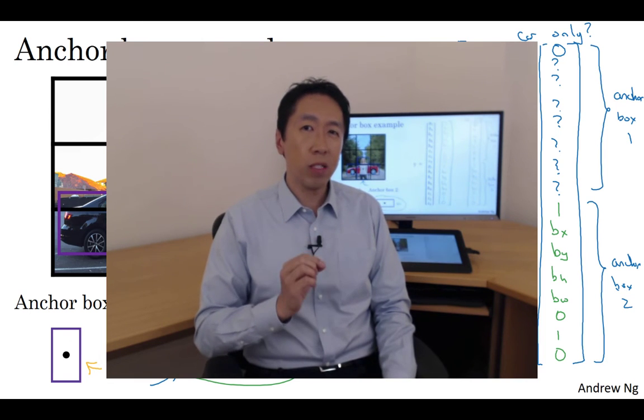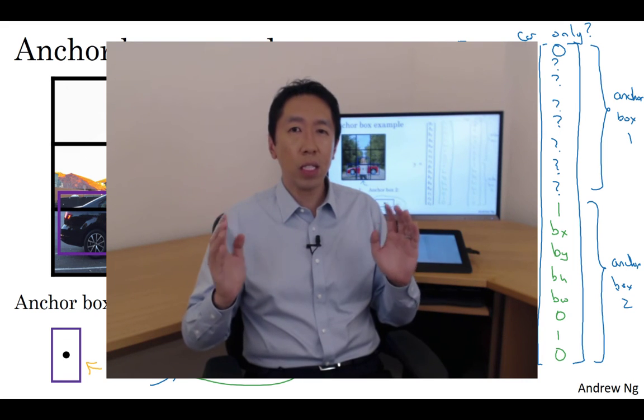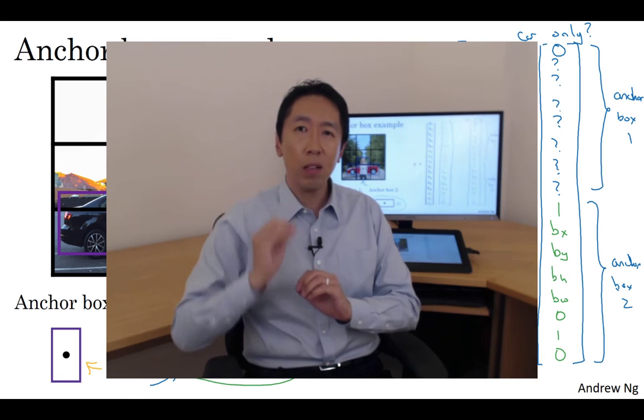So that's it for anchor boxes. And even though I'd motivated anchor boxes as a way to deal with what happens if two objects appear in the same grid cell, in practice that happens quite rarely, especially if you use a 19 by 19 rather than a 3 by 3 grid. The chance of two objects having the same midpoint out of these 361 cells - it does happen but it doesn't happen that often. The maybe even better motivation or even better results that anchor boxes gives you is it allows your learning algorithm to specialize better. In particular, if your data set has some tall skinny objects like pedestrians and some wide objects like cars, then this allows your learning algorithm to specialize so that some of the outputs can specialize in detecting wide, short objects like cars, and some specialize in detecting tall skinny objects like pedestrians.